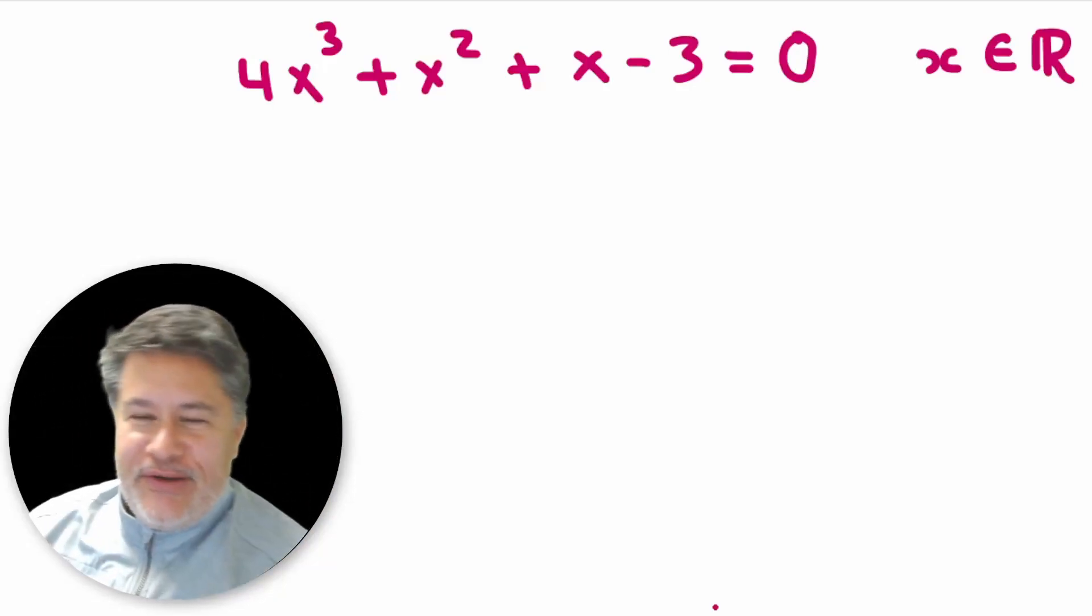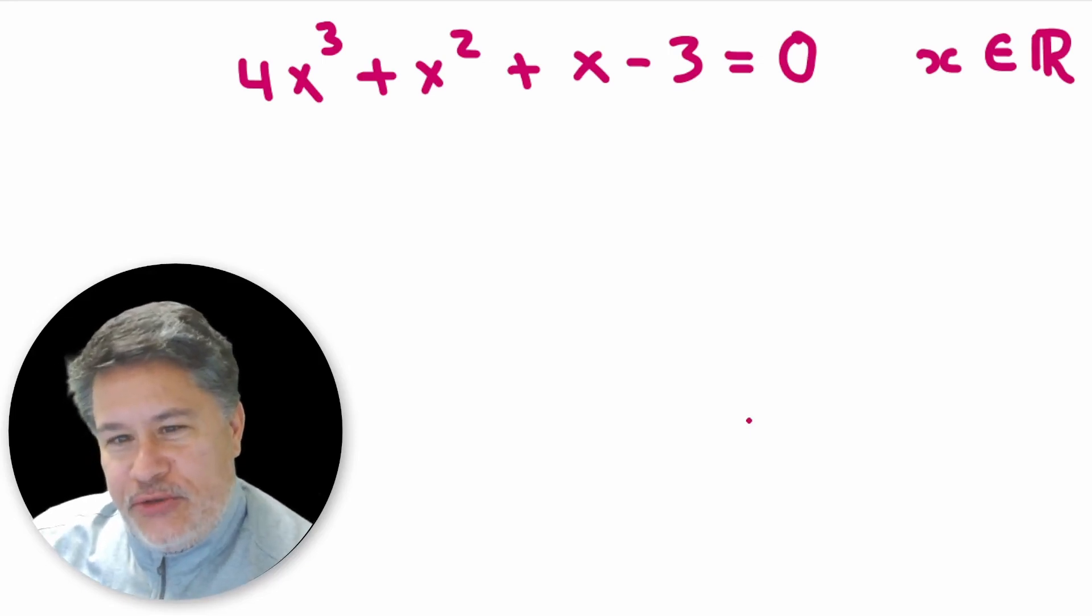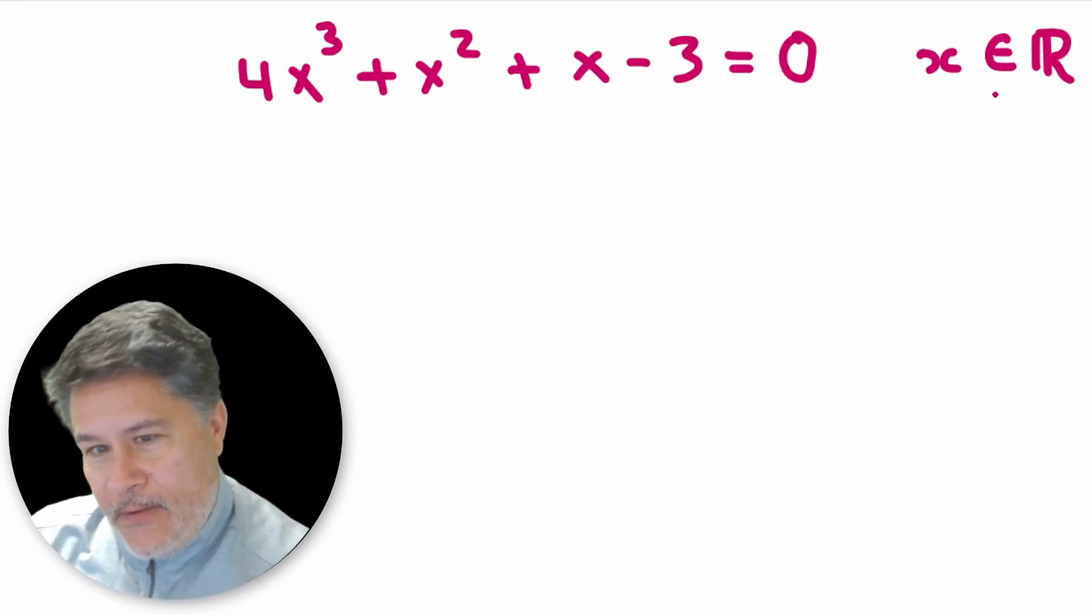What's up everybody? Are you guys ready for another math problem? Here's a good one. We are going to put our equation solving skills to the test. As you can see, we've got a cubic in front of us: 4x³ + x² + x - 3 = 0. And we're going to solve it for x under the real numbers.